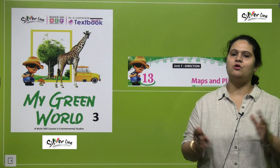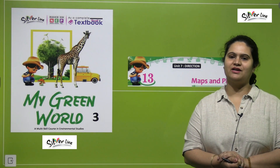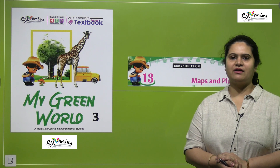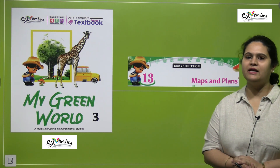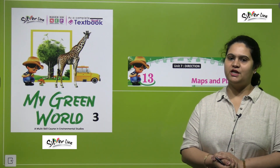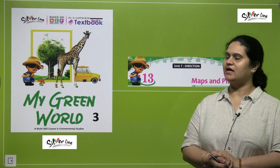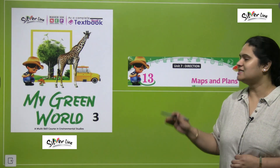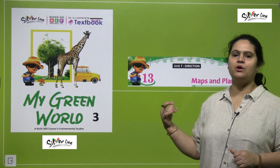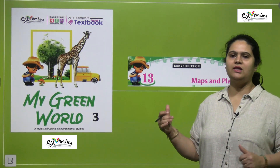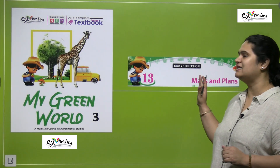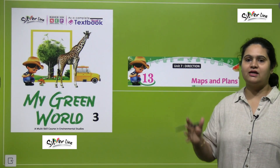Hello wonderful learners, hope you're all having a good day. This is Aachal, your educator and friend welcoming you all to Silver Line Books by Turning Point Publishing House. This is My Green World for Class 3 and we are going to begin with Unit 7 of your books, that is Direction.